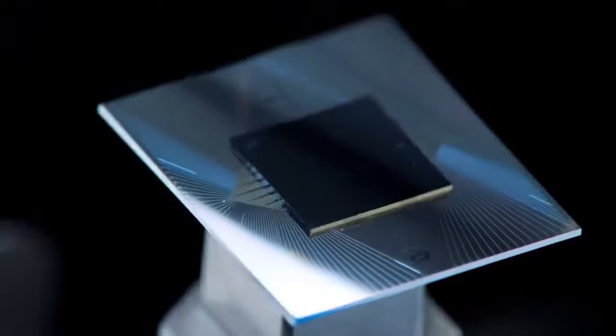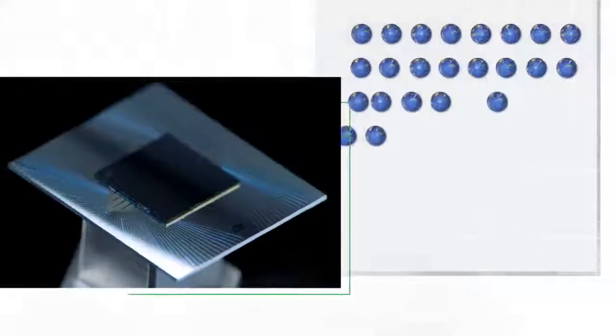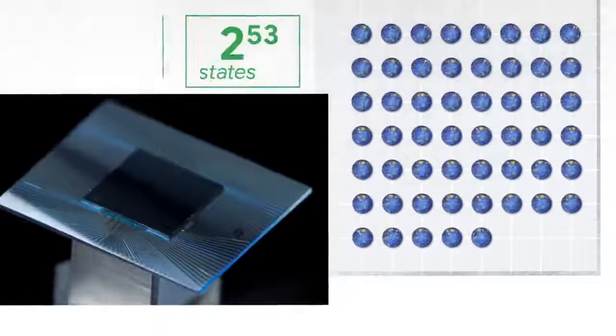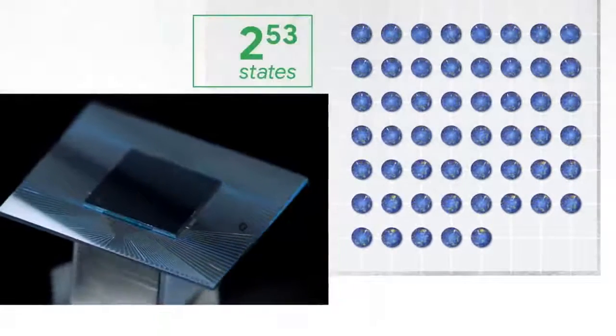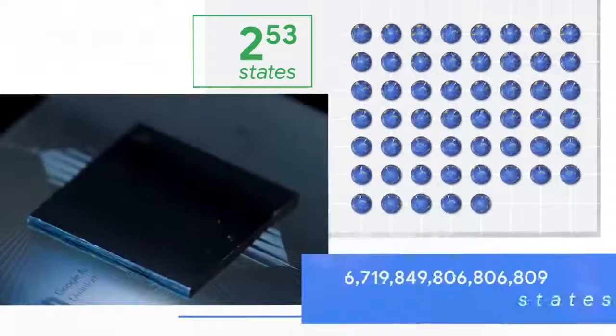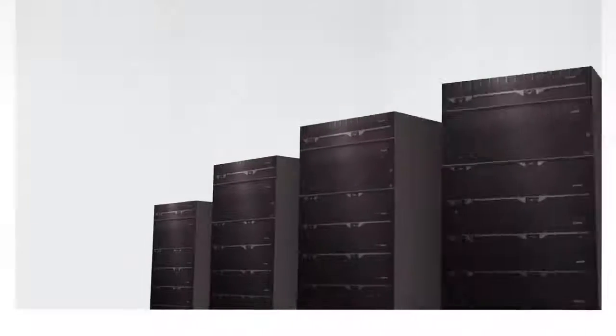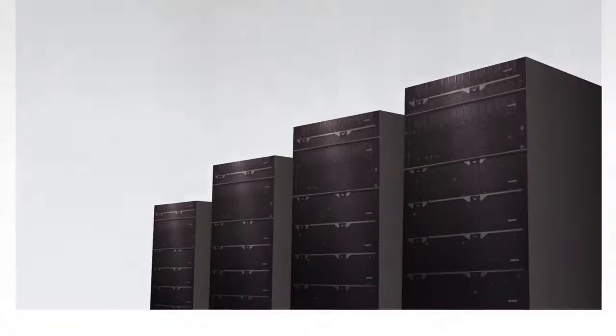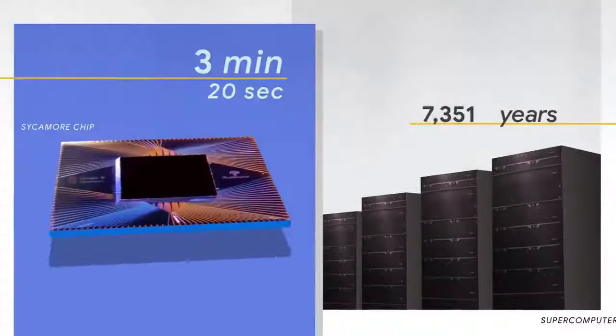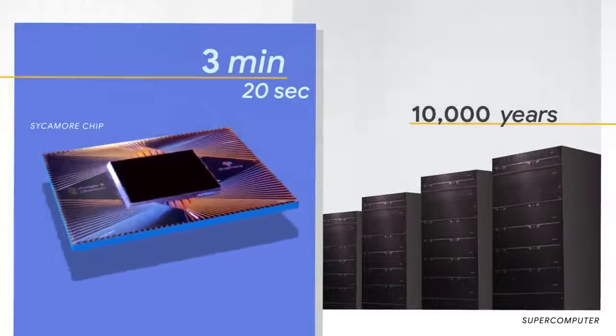The processor that achieved quantum supremacy is called the Sycamore processor. It processes 2 to the 53 states in parallel — that's 10 million billion — and that enormous amount of parallel processing is what gives it its power. Our estimate is that it would take thousands of years for the largest supercomputer in the world to complete the full computation.